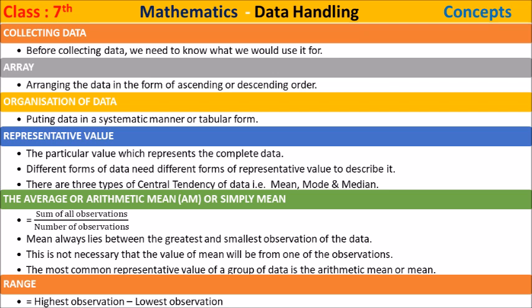The average, or arithmetic mean, or simply mean, is equal to the sum of all observations divided by the number of observations. Mean always lies between the greatest and smallest observations of the data. It is not necessary that the value of mean will be one of the observations. The most common representative value of a group of data is the arithmetic mean.